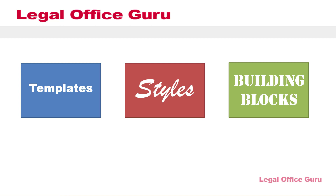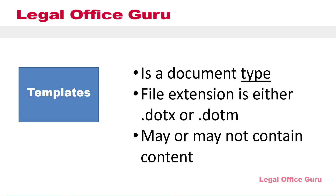These three elements relate to one another in very specific ways. The items that this gentleman was referring to as the Styles he wanted — pleadings, motions, discovery requests, etc. — are actually examples of templates. A Microsoft Word template is a specific document type with one of two file extensions: .dotx and .dotm. The difference is that .dotm files can have macros or bits of VBA code embedded in them. If your firm uses any Word plugin, like for a document management system or a document assembly program, that plugin likely uses at least one .dotm template.